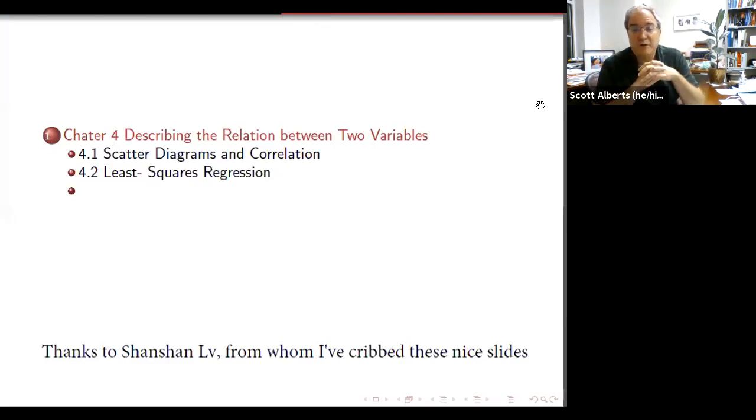So the two things we're going to do are correlation, which measures how strong the relationship two variables have, and then least squares regression, which is how we find that line of best fit that's going to help us predict what the relationship between the two variables is. As before, I have totally cribbed these slides from Shanshan Lv, who's another faculty member in our department, so thanks to her for that. And let's get started with the first section.